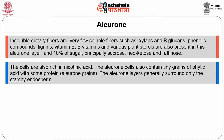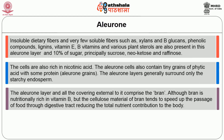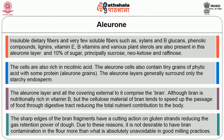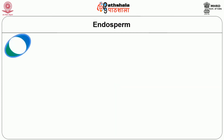The aleurone cells also contain tiny grains of phytic acid with some protein. The aleurone layer generally surrounds only the starchy endosperm. The aleurone layer and all the covering layers external to it comprise the bran. Although bran is nutritionally rich in B vitamins, the cellulose material of bran tends to speed up the passage of food through the digestive tract, reducing the total nutrient contribution to the body. The sharp edges of the bran fragments have a cutting action on gluten strands, reducing the gas retention power of the dough.